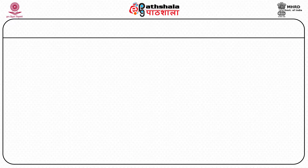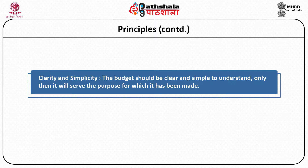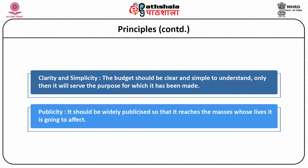Related to the above point is the principle of clarity and simplicity. Budget should be as clear and simple so that it is understandable. Only then will it serve the purpose for which it has been made. Budget is a document made for the understanding of those to whom the executive is accountable, and so simplicity becomes a very essential feature. Last but not least, it should be widely publicized so that it reaches the masses whose lives it is going to affect, as citizens are considered to be the rulers in a democracy and have every right to know the expenditure of the government.